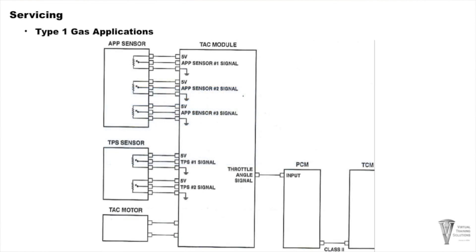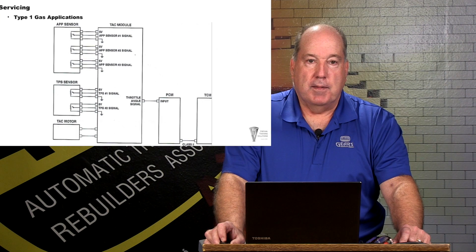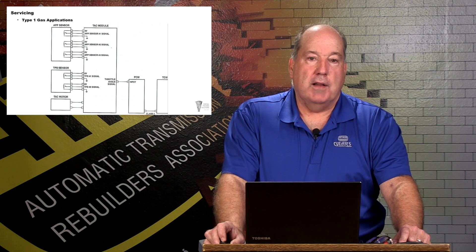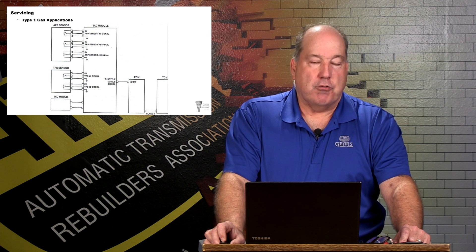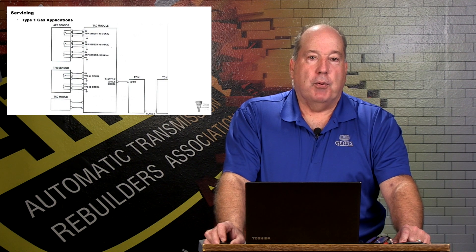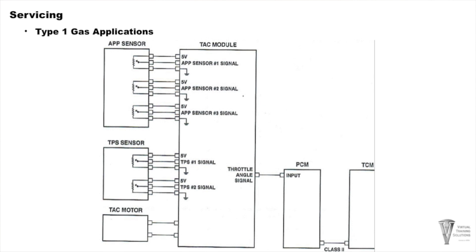On gas applications, there are different configurations. Some use a direct input on later vehicles to the PCM; some use a TAC module, and then the TAC module sends the signal to the TCM and PCM. In this type 1 unit with a standalone TAC module, your APP input goes directly into the TAC module. The TAC module looks at that input and sends a signal over your throttle angle circuit to the PCM, which then sends it on to the TCM via the data bus.